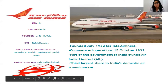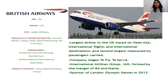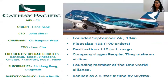This is Air India. The origin is India. The founder is JRD Tata, and its frequently operated routes are Bangalore, Cochin, Hyderabad, Delhi, and Jaipur. Then we have British Airways, whose origin is UK, and its frequently operated routes are Zurich, Venice, Tokyo, Sofia, San Francisco, etc. The next we have is Cathay Pacific. Its origin is Hong Kong, and frequently operated routes are Bangkok, Frankfurt, Dubai, Tokyo, Singapore.